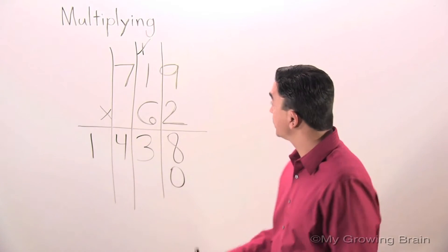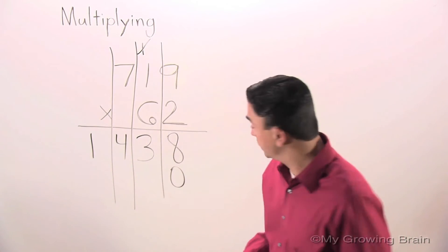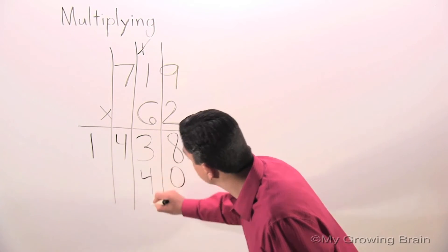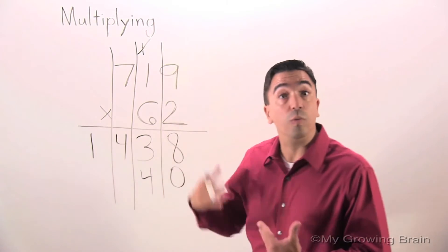Now, we're ready to multiply. Six times nine is 54. Carry the five, or regroup.